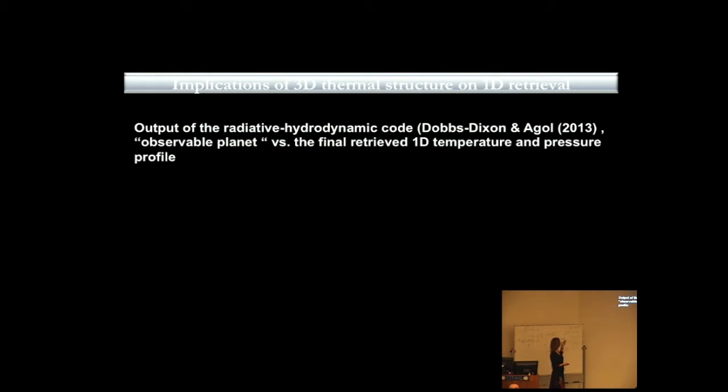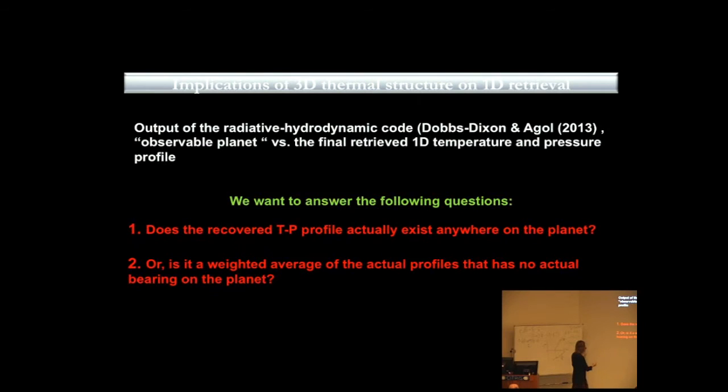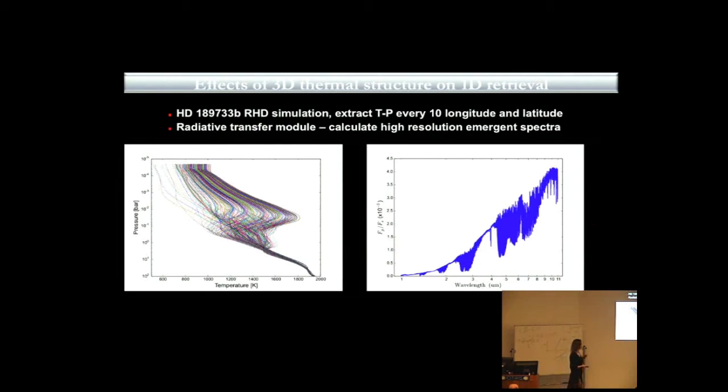So what we did, we used the output of the radiative hydrodynamic code from Ian, and we used it as an observable planet. We tried to validate the output that will come from the retrieval and see whether each of these profiles... Actually, these are the questions that we wanted to answer. Does the recovered TP profile actually exist anywhere on the planet, or is it the weighted average of the actual profiles that has no bearing on the planet?